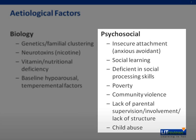Under the psychosocial subheading, individuals with CD and ODD have insecure attachment, in particular the anxious avoidant type. Social learning is implicated, and there is a deficiency in social processing skills. Among other factors are poverty, community violence, lack of parental supervision, and child abuse.